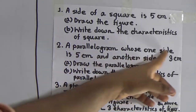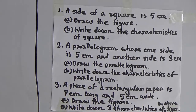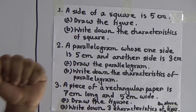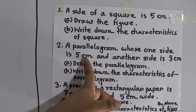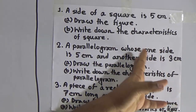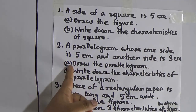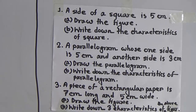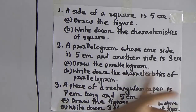A parallelogram whose one side is 5 centimeter and another side is 3 centimeter. My dear students, in the half-yearly exam we already learnt the definition of parallelogram and its characteristics. But in this case, the side lengths are given — one side is 5 centimeter and another side is 3 centimeter. By using these two lengths, we need to draw the figure. So part A is: draw the parallelogram.